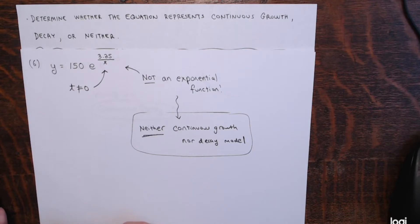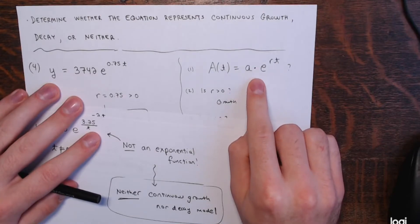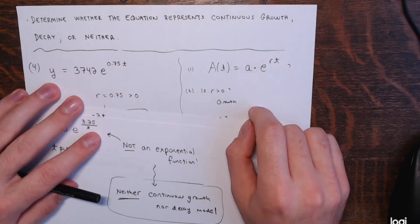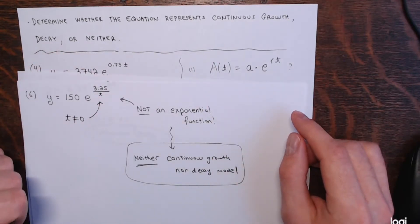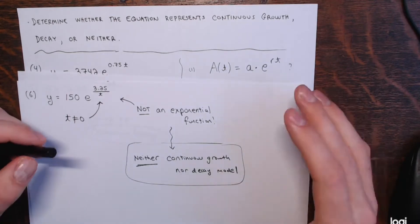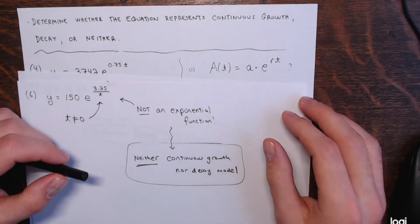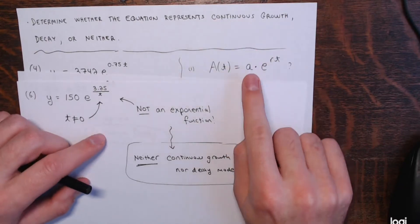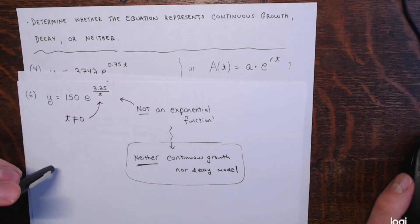That's it for this video. Hopefully after watching these six examples you can identify a continuous exponential growth and decay model — something that looks like A of T equals A times E to the RT — and notice when R is positive versus when R is negative. Given such a model, you should be able to evaluate it, plug things in, and figure out certain amounts and values. The key word again is continuous — when you see continuous growth, continuous decay, or compounding continuously, you must use a model like this. Thank you very much for watching.